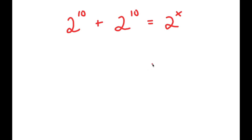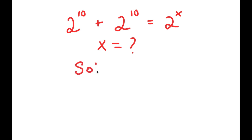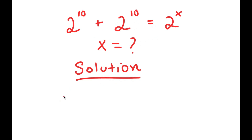In this problem, I have 2 to the power of 10 plus 2 to the power of 10 is equal to 2 to the power of x. So I want to find the value of x here. For my solution, I'm going to first start by rewriting my equation: 2 to the power of 10 plus 2 to the power of 10 is equal to 2 to the power of x.